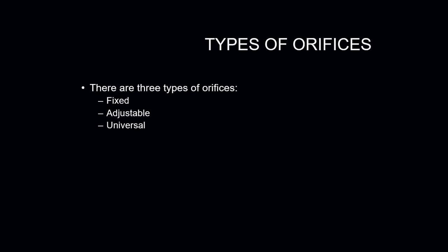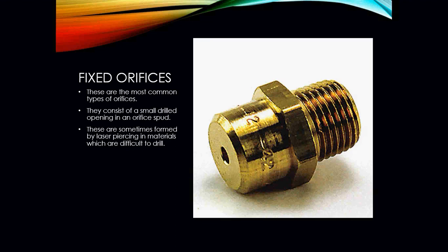There are three types of orifices we will run into in the HVAC industry: the fixed orifice, the adjustable orifice, and what is called the universal orifice. The fixed orifice is the most common type you're going to run into in residential settings. They consist of a small drilled opening in the orifice spud, and they're sometimes formed by laser piercing into the material, which is difficult to drill.